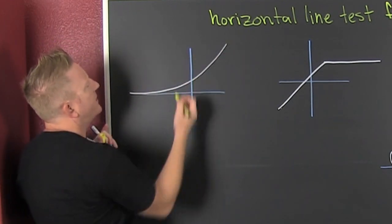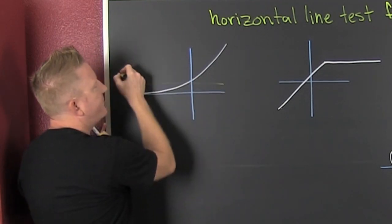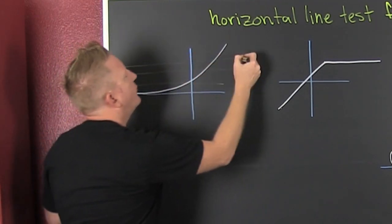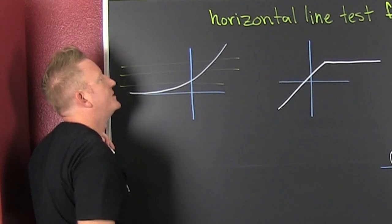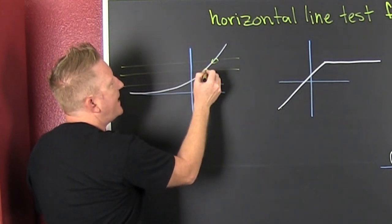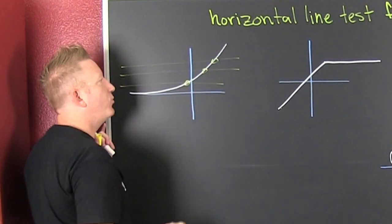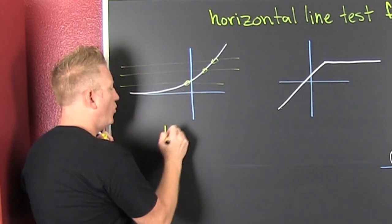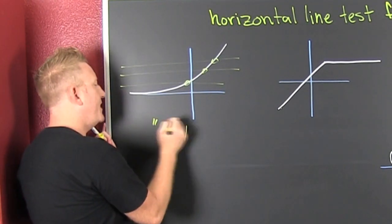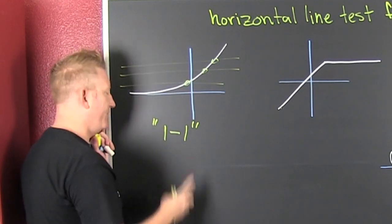Moreover, if we're looking at something like the exponential, for every horizontal line, it touches at most one spot. So is this one-to-one? This is one-to-one. That's the abbreviation for one-to-one — at least it's one definition of it.